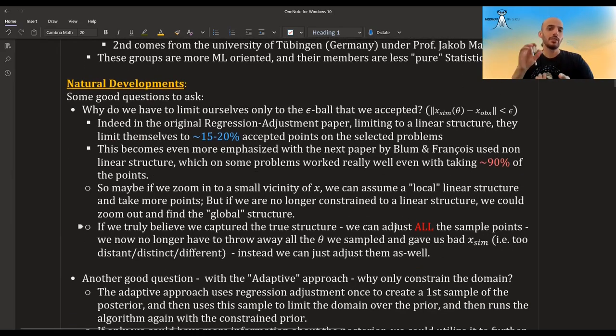So how I see it is if you zoom in on a small vicinity of the x theta structure, then maybe you can find something that looks like a linear structure. But if you zoom out and you look at the global structure, if you are no longer limiting yourself, constraining yourself only to linear structure, you can find the entire true structure. And so really, maybe if we believe that we capture the true structure, we can just take all the points and we no longer need this acceptance rejection scheme.